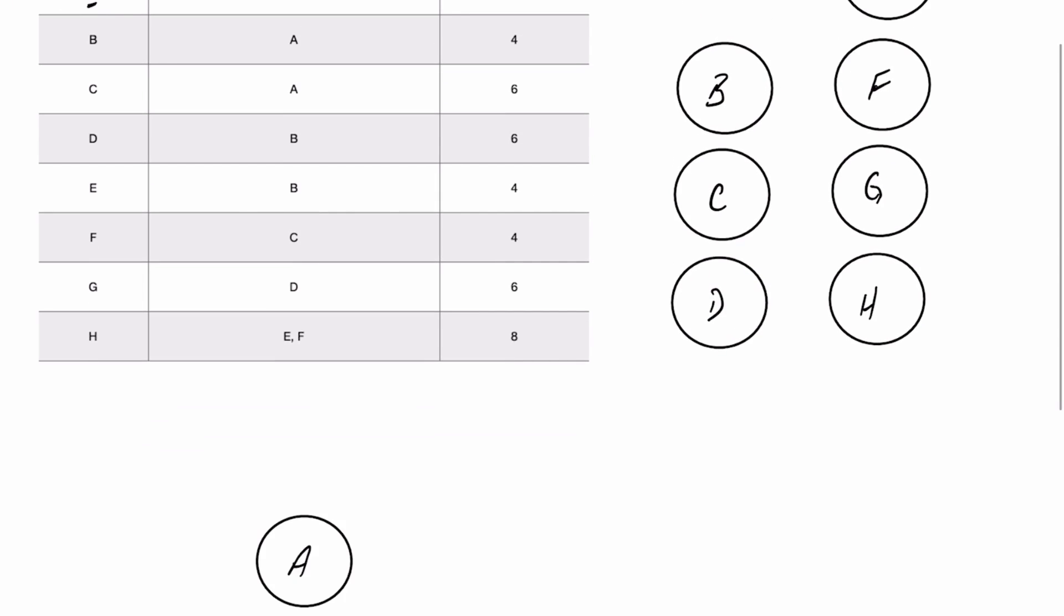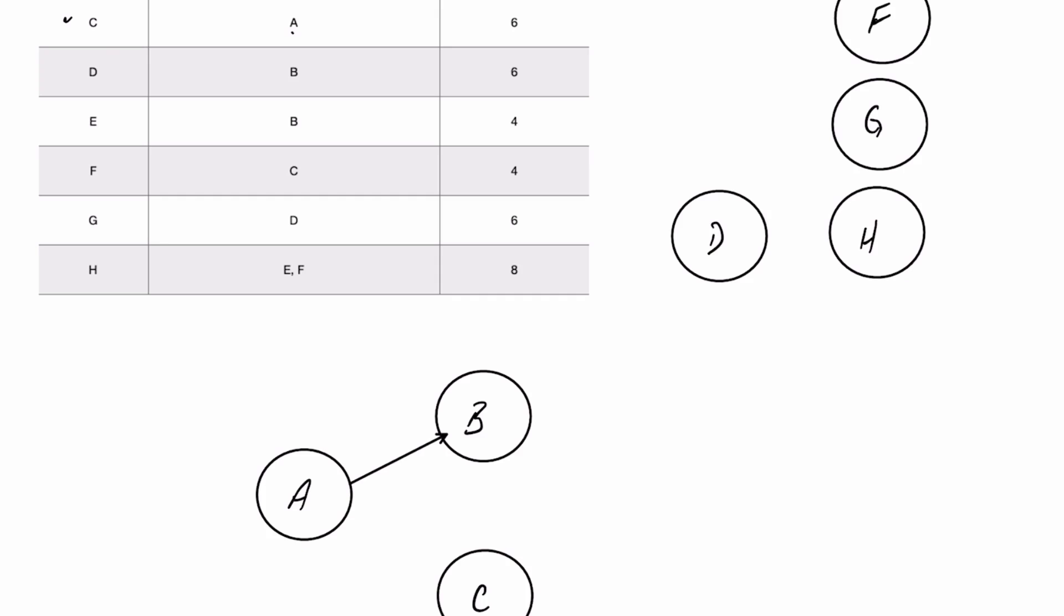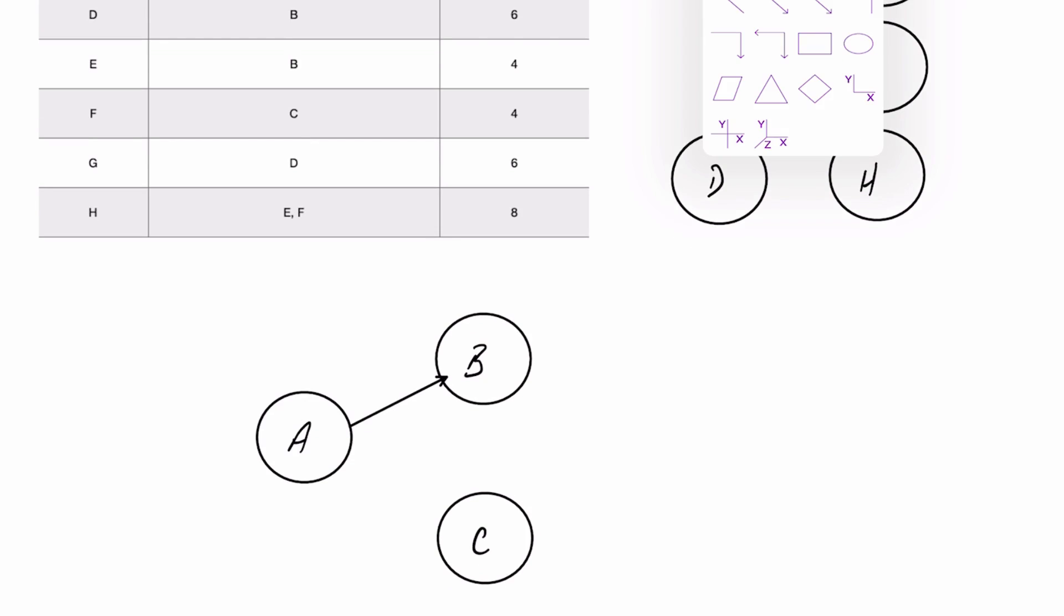Then we look at Activity B, and we see that actually both B and C have A as an immediate predecessor. So what we can do then is grab each of the activities B and C and put them in our map, something like that, and then we can join them with a couple of lines here.